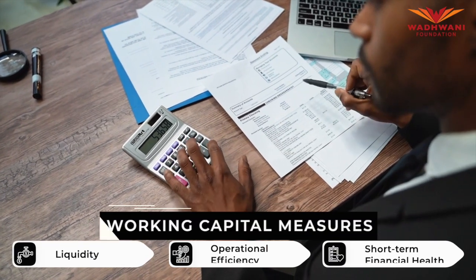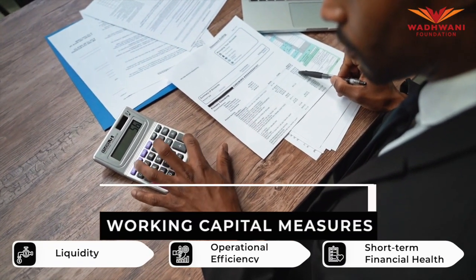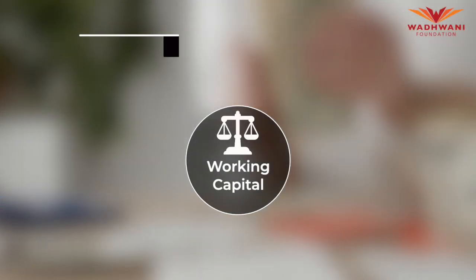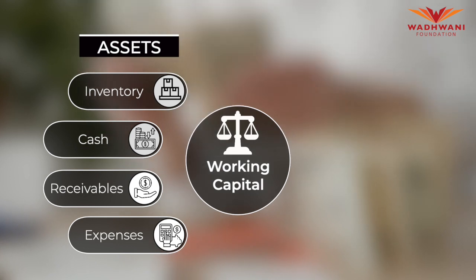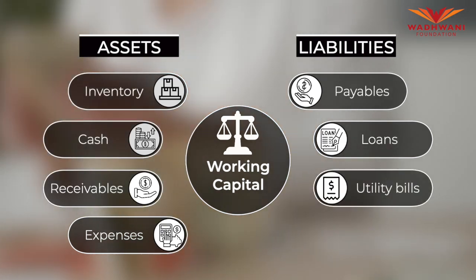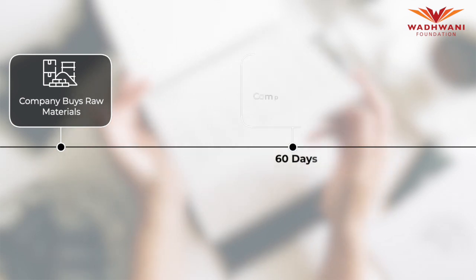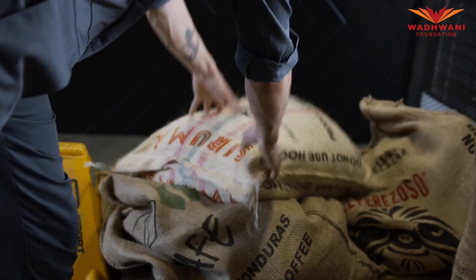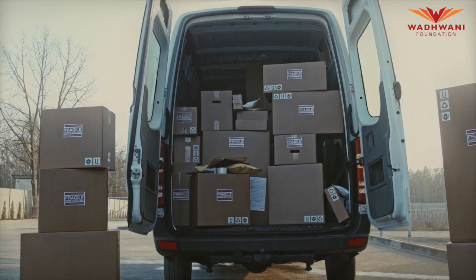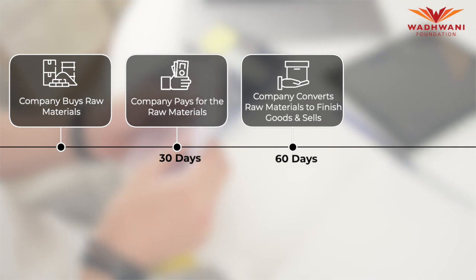Working capital is the lifeblood of your business. You take all your current assets minus all your current liabilities to get working capital. Current assets are inventory, cash, resources, and prepaid expenses, whereas liabilities are payables to vendors, loans, utility bills, and salary/wages. For example, your company buys raw material on day zero, the vendor offers 30 days of credit, and you take 60 days to convert raw material into finished goods. By day 30 you must pay your vendor, but you have not yet sold your finished goods.